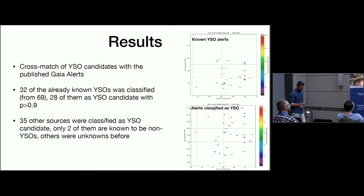We cross-matched these identified YSO candidates with the published Gaia alerts. Only 32 are present in this initial sample of 103 million. From the 32, 28 were classified as YSOs with P greater than 0.9. We also classified 32 other sources as YSO candidates. Only two of them were known to be some other kind of source, not YSOs, but all the others were unknowns.